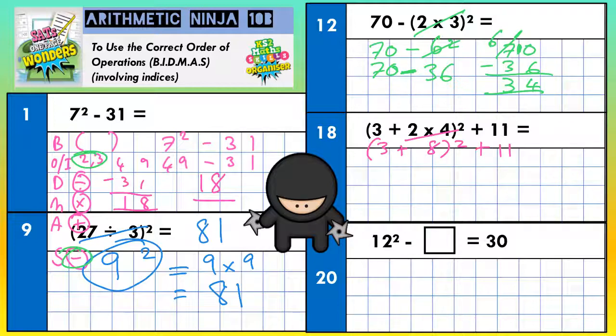All we've done is that 2 times 4 is 8. Still got the bracket there. Just got to work out the rest of the bracket now. Cross out the bracket. Write your answer underneath. 3 plus 8 is 11. Drop down the squared. Drop down the plus 11.